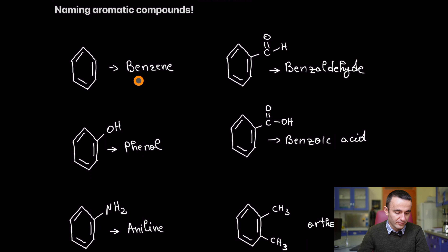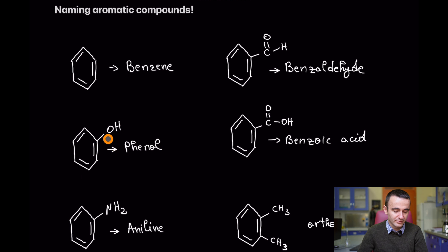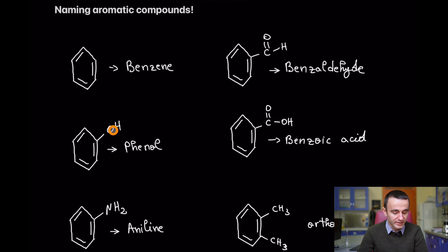The first one is benzene — a six-membered ring that contains three double bonds. Next is benzaldehyde. Then phenol — not the IUPAC name, because the IUPAC name should be hydroxybenzene, but phenol is commonly used, widely accepted, and you have to remember it as phenol.